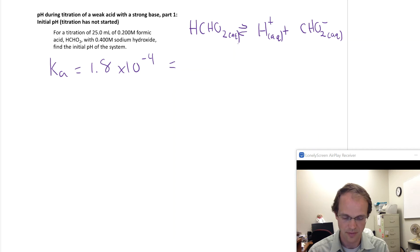That's what we have for our balanced equation. Our Ka is just going to be H plus times CHO2 minus, the formate ion, divided by the concentration of HCHO2. How are we going to find all those?